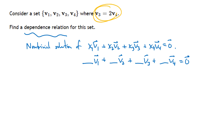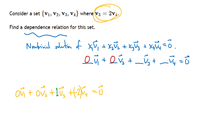We'll use the fact that v3 = 2·v4. Our goal is to get the zero vector, so we subtract 2·v4 from both sides: v3 - 2·v4 = 0. That's close to what we want, but we're missing v1 and v2. However, it's fine for some x's to be zero — just not all of them. So we rewrite: 0·v1 + 0·v2 + 1·v3 + (-2)·v4 = 0. That is our dependence relation, and since not all x's are zero, it counts.